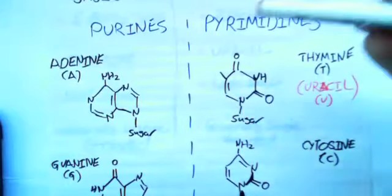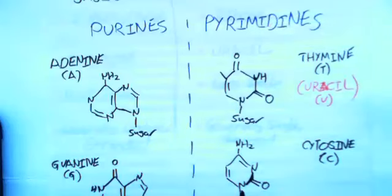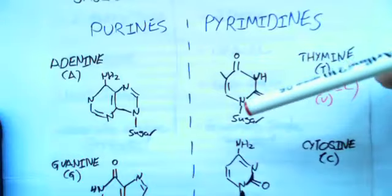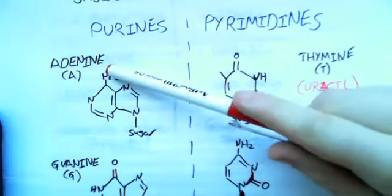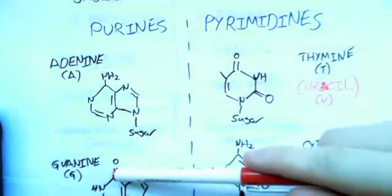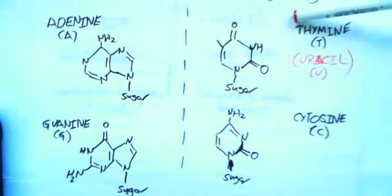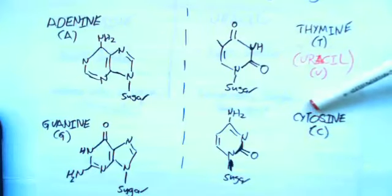To remember purines versus pyrimidines, I think pyrimidine, the word itself, is longer, so that's the shorter one. The four main ones are adenine, abbreviated A, guanine, abbreviated G, thymine, abbreviated T, and cytosine, abbreviated C.